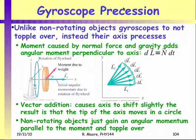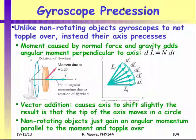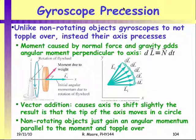When the gyroscope moves to a new position, the moment between the weight and the tension now acts in a new direction, making the angular momentum change again, so it keeps rotating. What you end up with is the axis of the gyroscope rotating around continuously — this is called precession of the gyroscope.